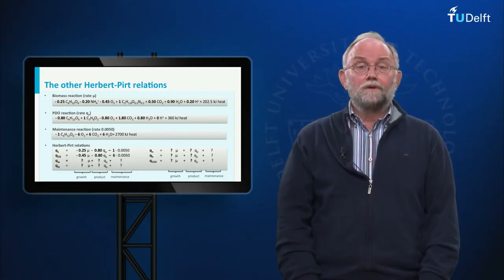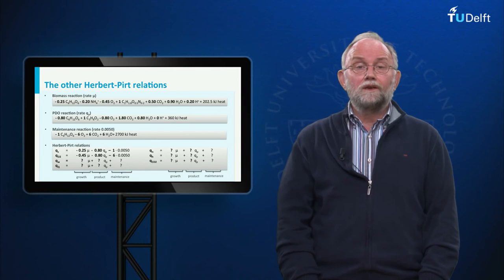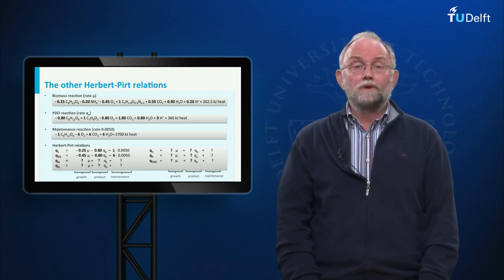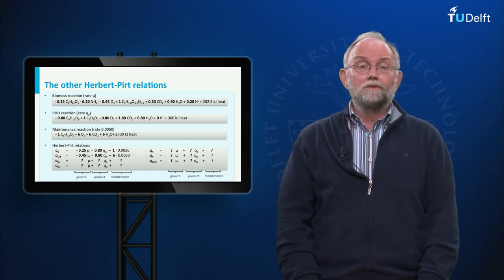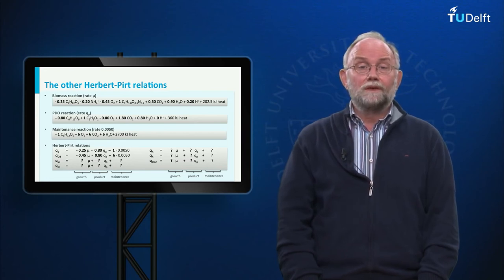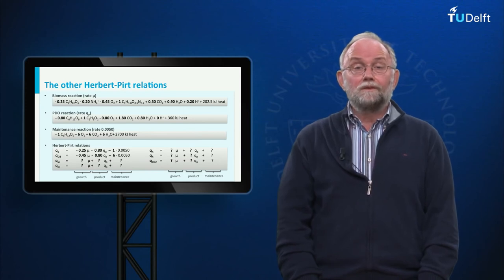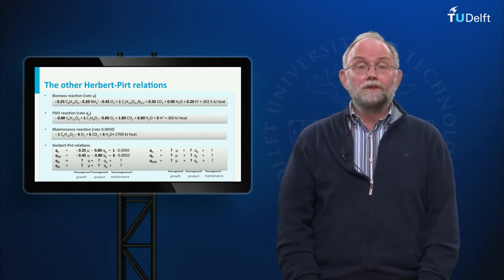Using the black box model reactions in a similar way, you should now calculate yourself the Herbert-Pert relations for Q_CO2, Q_ammonium, Q_proton, Q_water, and Q_heat. Also reflect on and give the units of the parameters in all these Herbert-Pert relations.